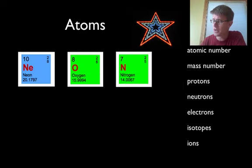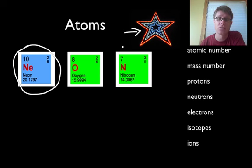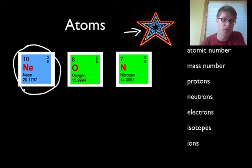On the periodic table you have essentially a box, and that box represents one atom — one type of element. So we'll call this neon right here. Neon is a gas, it's a noble gas, and if you put it inside a tube and run electricity through it, it's going to glow. But what do we know from this 10, this 20, this 2, and this 8? What does that tell us?